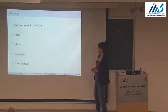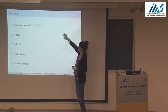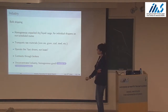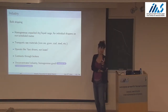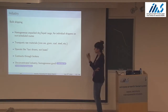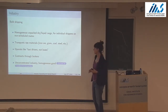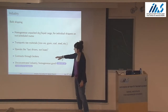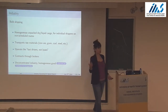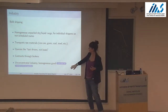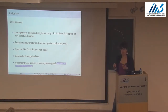I'll talk about the industry data, facts, model estimation, and then give counterfactuals. Bulk shipping is the same environment as before — these ships are exactly like taxi drivers, meeting an exporter, taking cargo from A to B, and then finding someone else. Contracts happen through brokers, the market is extremely decentralized, unconcentrated, and deals with homogeneous goods.